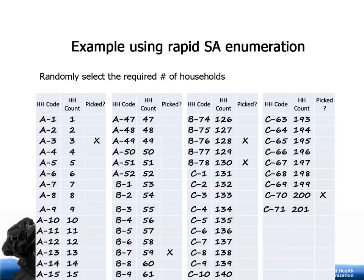If there are multiple team members, the 20 households can be divided between the team members so that each person, or SCT team member and village guide pair, does not have to visit all the households.